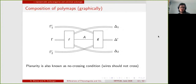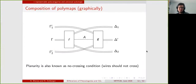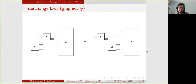The planarity condition, also known as the non-crossing condition, states that wires should not cross. In particular, this means that either one list or the other must be empty on each side. The interchange law says that if you take a polymap H and want to compose it with two polymaps F and G along two different inputs of H, it shouldn't matter in which order you do it — you can start by plugging F and then G, or the other way around. A similar statement holds for outputs.